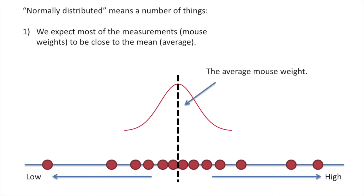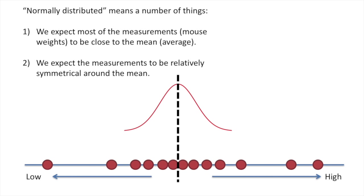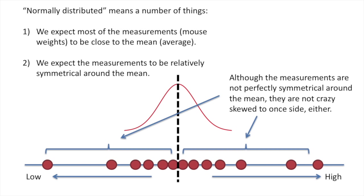Normally distributed means a number of things. First, we expect most of the measurements, for example mouse weights, to be close to the mean or average. And we see, lo and behold, in our data set, most of the mice weigh close to the average. We also expect the measurements to be relatively symmetrical around the mean. Although the measurements are not perfectly symmetrical around the mean, they are not crazy skewed to one side either. This is pretty good.